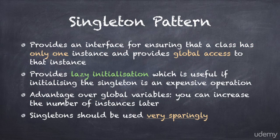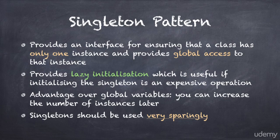And finally, the singleton pattern. It provides an interface for ensuring that a class has only one instance. Use it to ensure global access to that single instance. The advantage of a singleton pattern over a global variable is that you can later change your mind and actually increase the number of instances. But be very careful with this pattern — singletons are just fancy global variables and should be used very sparingly.